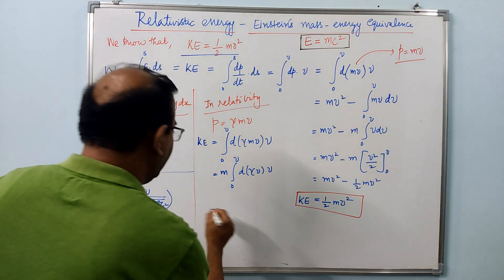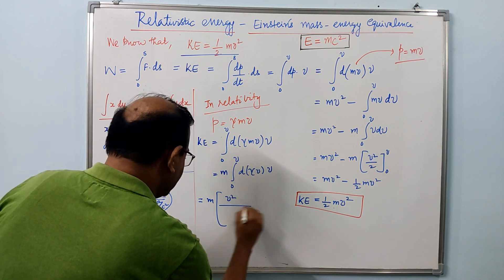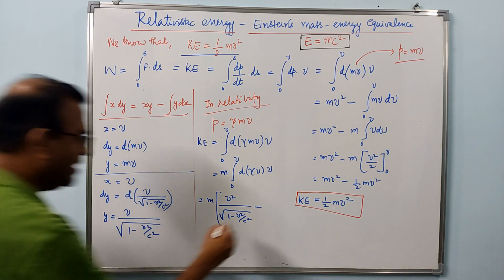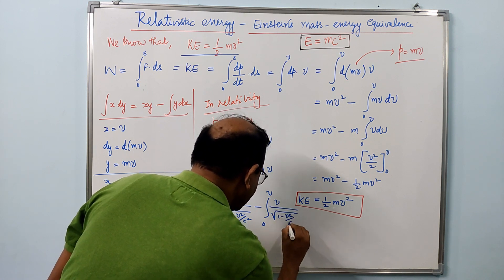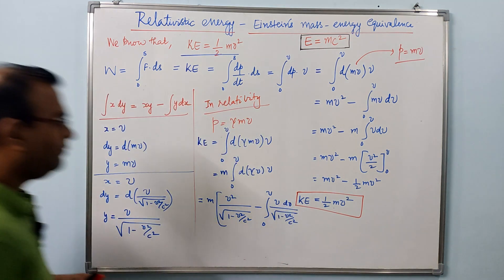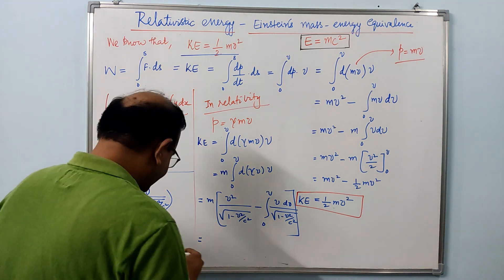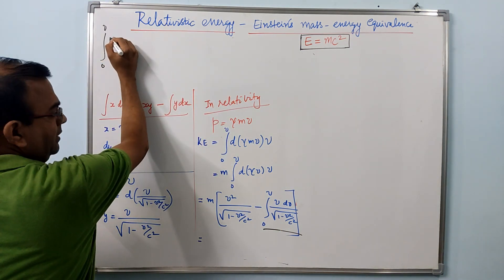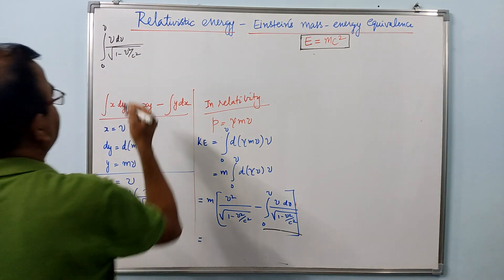Therefore y equals v over the square root of 1 minus v²/c². Applying integration by parts again, we write m times: the xy term gives v² over square root of (1 minus v²/c²), minus the integral of y dx, where y is v over square root of (1 minus v²/c²) and dx is dv. We will work out this remaining integral separately — the integral from 0 to v of v dv over square root of 1 minus v²/c².